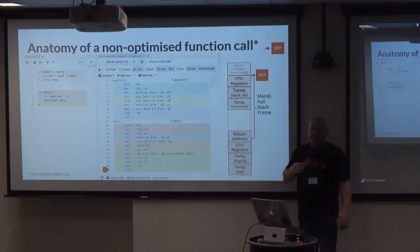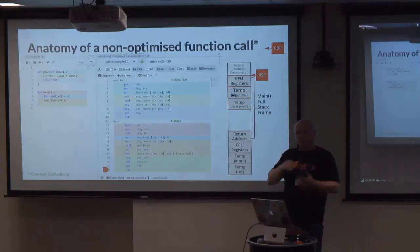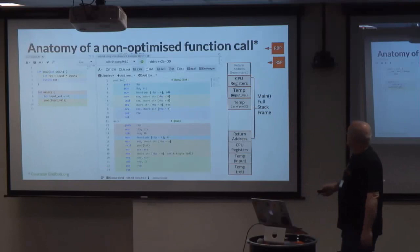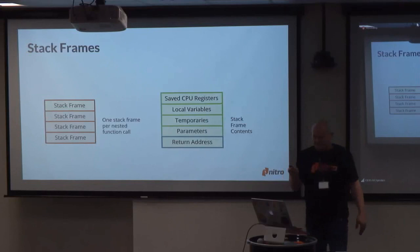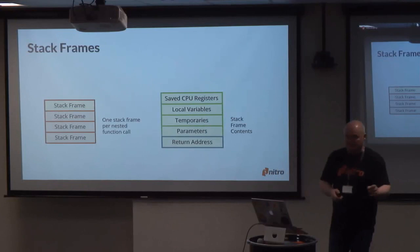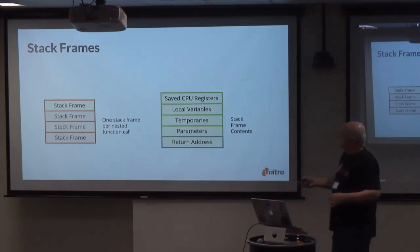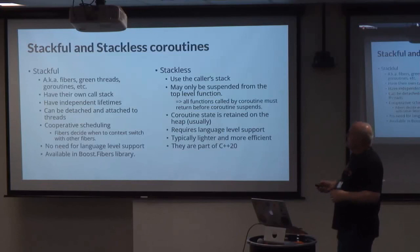What we have here is what's called a stack frame, and every function call has a stack frame. You go into a function, you create a stack frame. From that function you go into another one, you push another stack frame onto the stack. This is how the context is remembered between the caller and the callee. The typical stack frame contains saved CPU registers, local variables, temporaries if needed, parameters if they're large and can't be passed in registers, and a return address. Where you have multiple functions nested, you have multiple stack frames stacked up — this is how the context is remembered and unrolled as we go along.